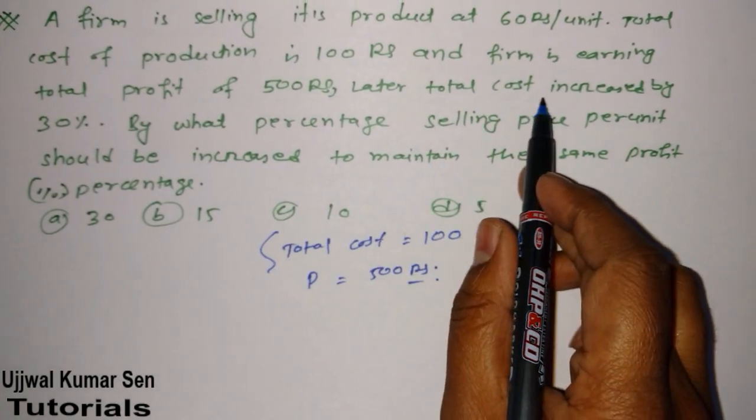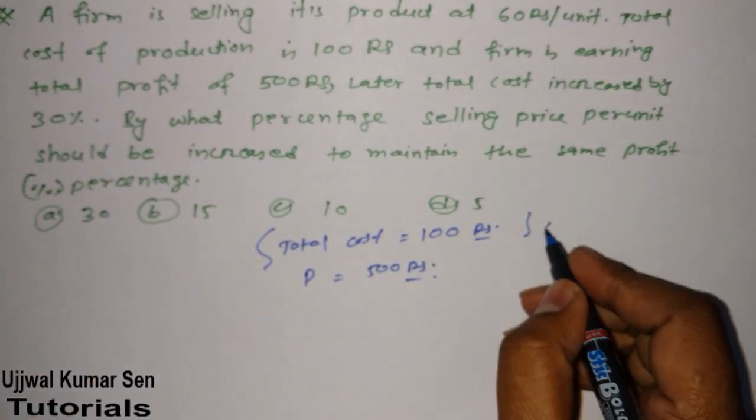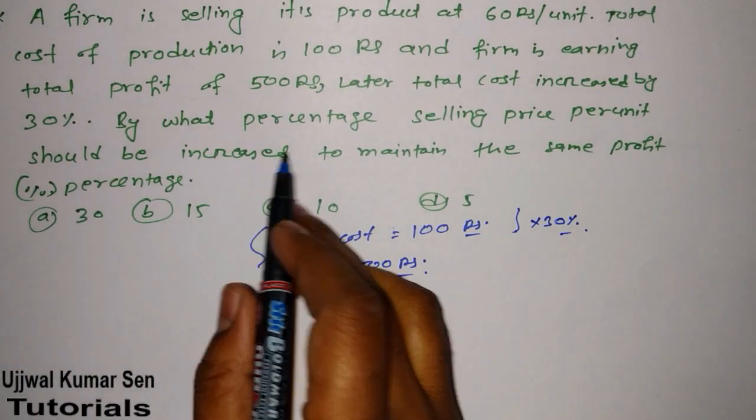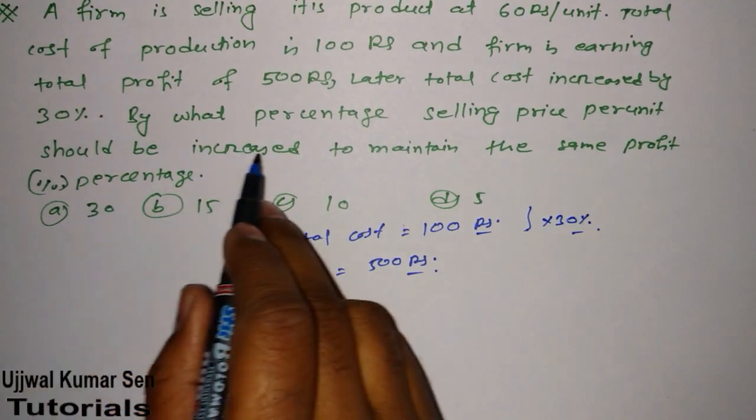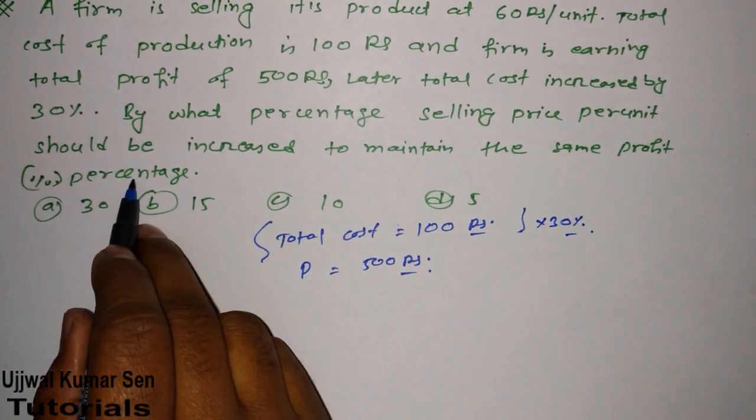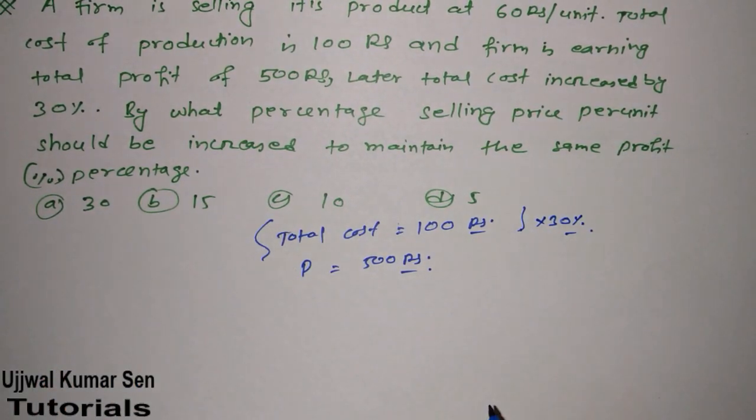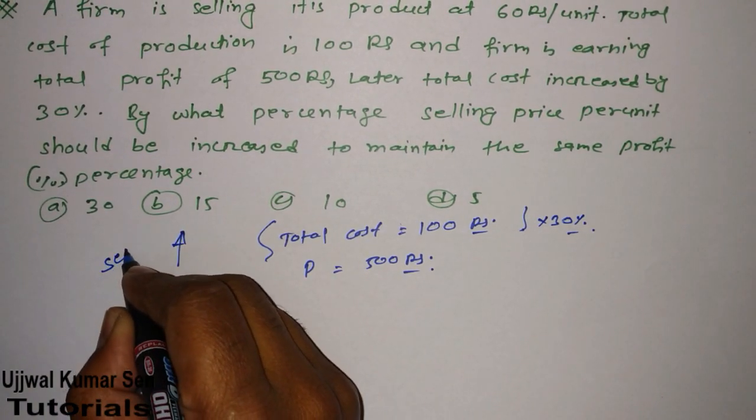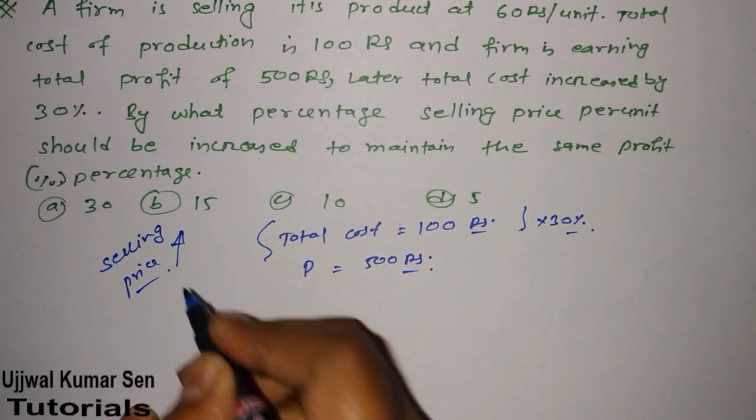Now it says later total cost increased by 30 percent. By what percentage should the selling price per unit be increased to maintain the same profit percentage? That means by what percentage should we increase the selling price?